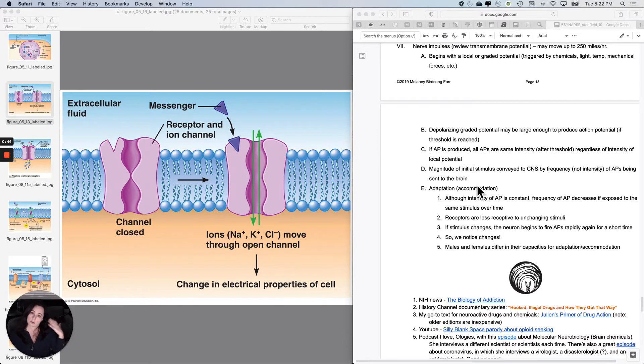So how does your brain, your central nervous system, code for intensity? Well, we know this. It's frequency coding. It's not like a bigger action potential, but more frequent action potentials over time.